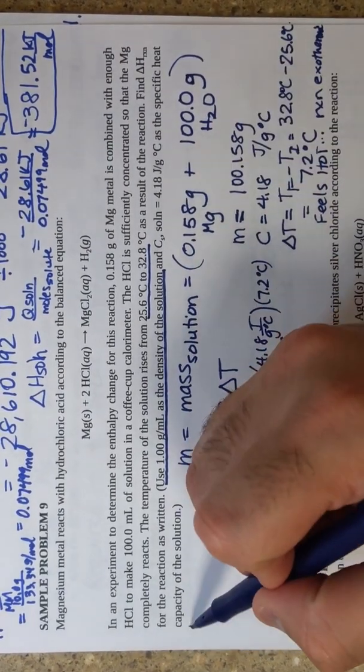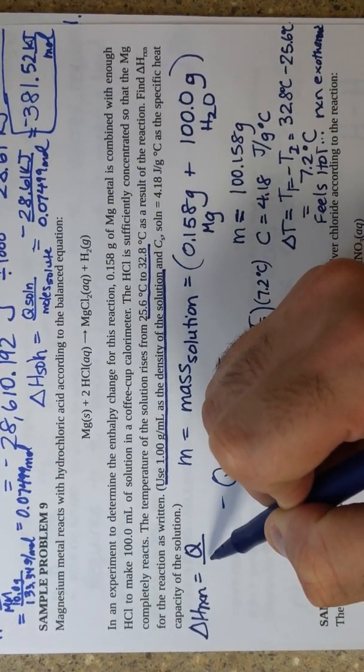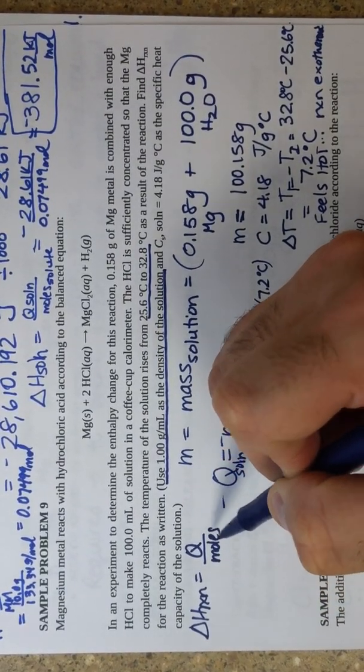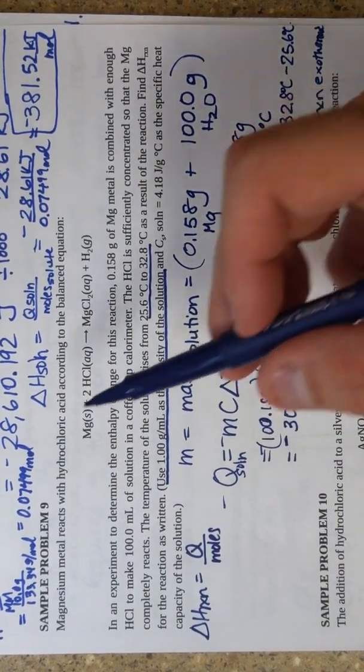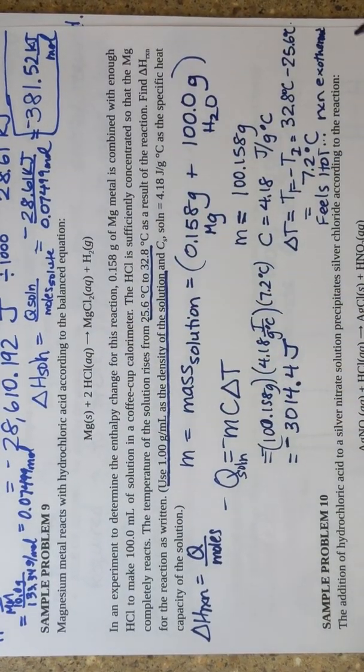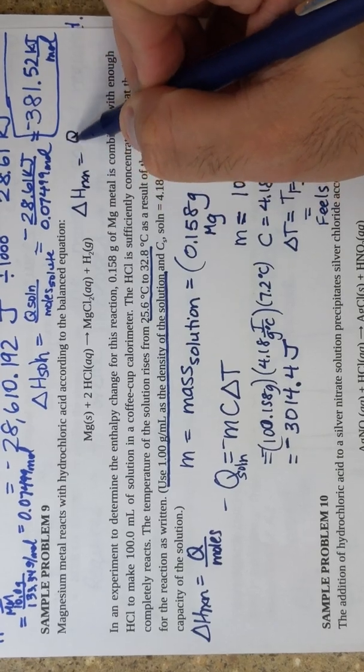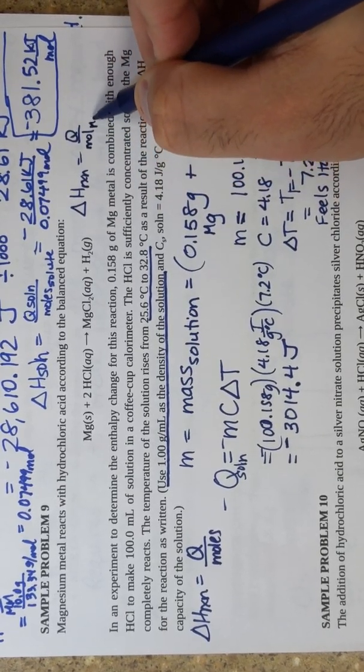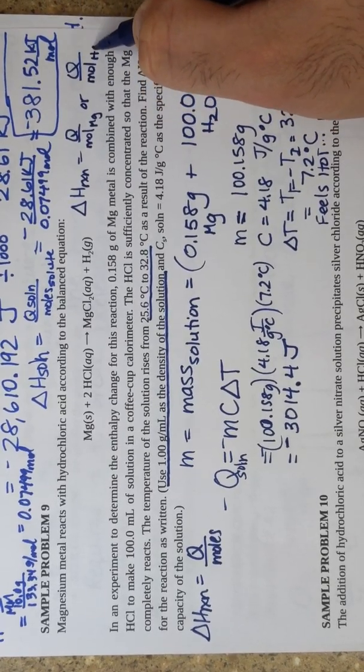It wants delta H. Delta H of reaction is going to be Q over moles or Q over N. Involved in the reaction is magnesium and hydrochloric acid. If I want delta H, I could have delta H of the reaction be equal to Q over moles of Mg or Q over moles of HCl. I don't have enough information to figure out the moles of HCl. I don't know its concentration or amount.